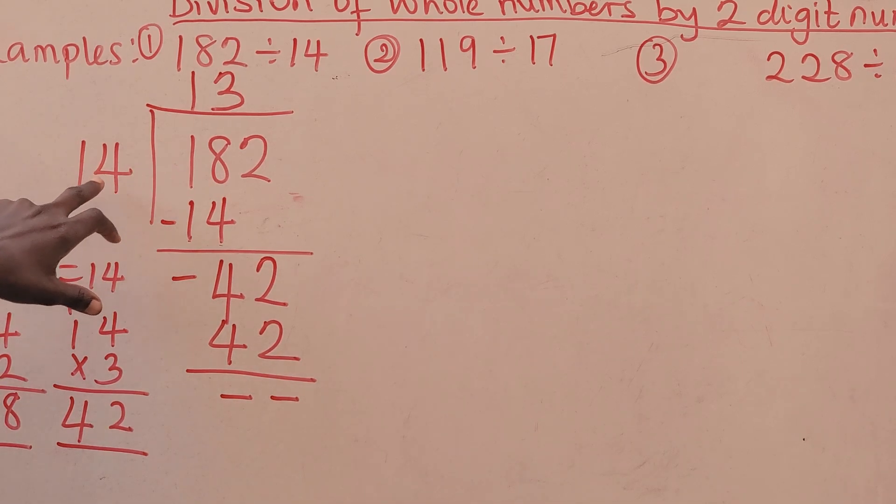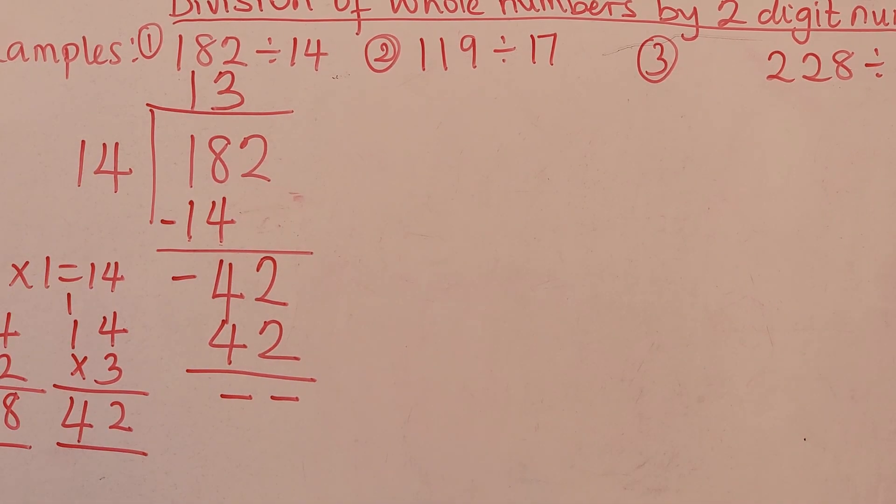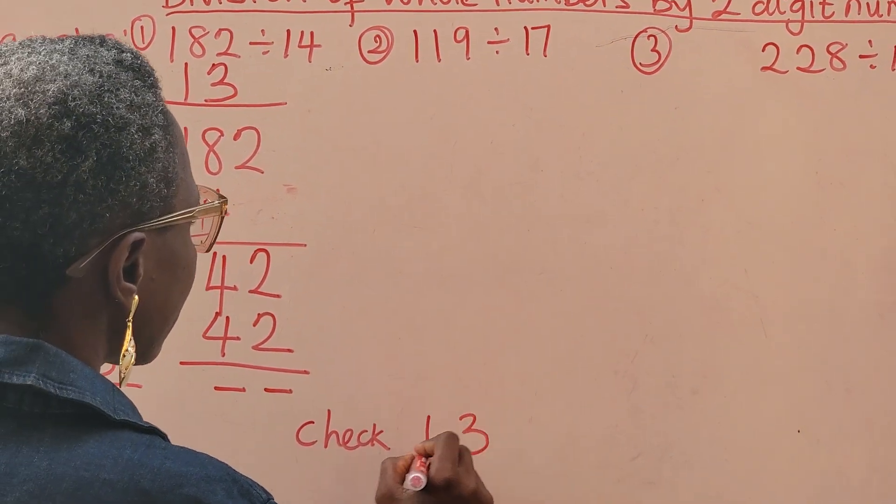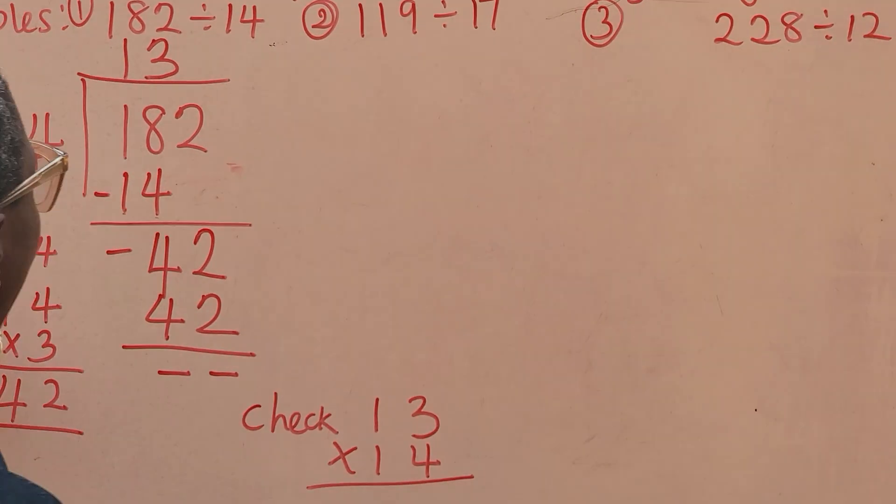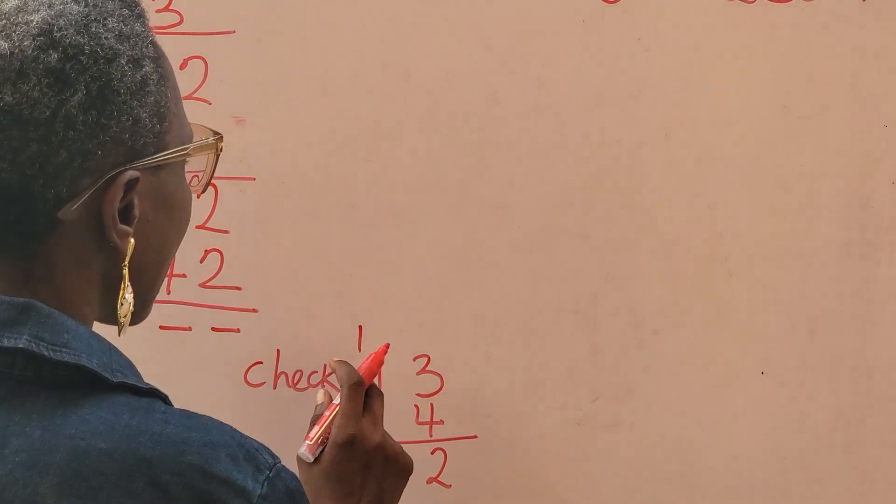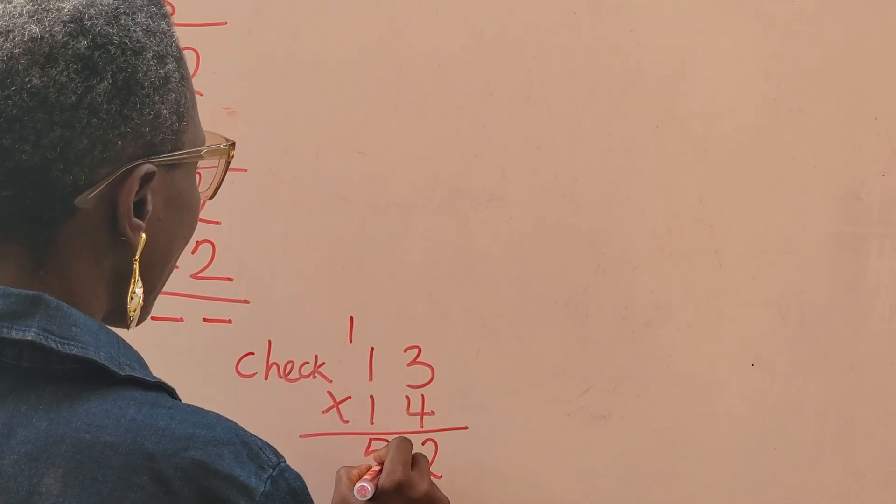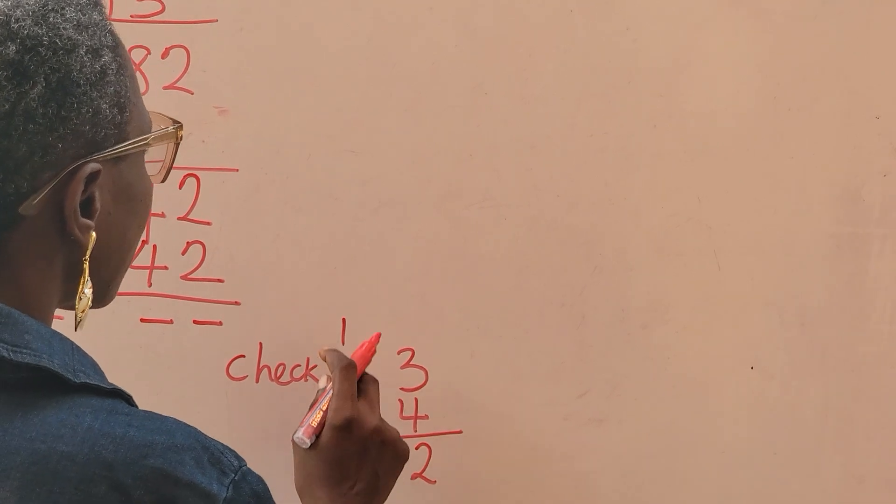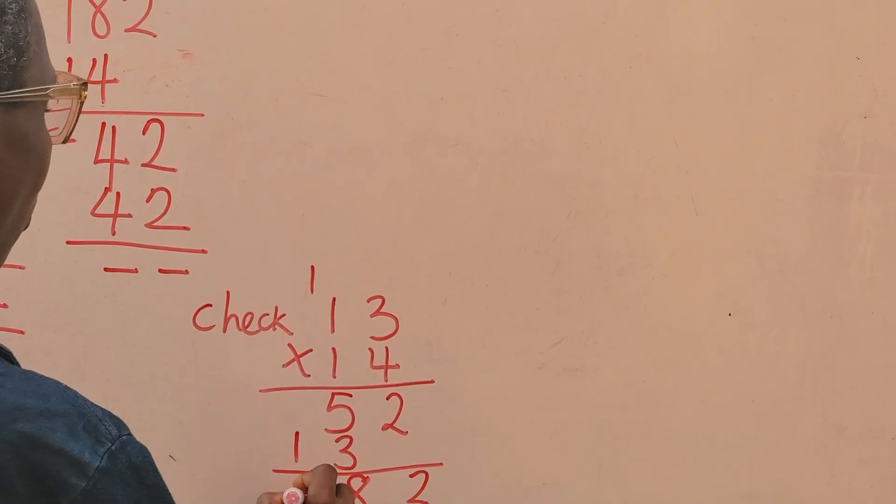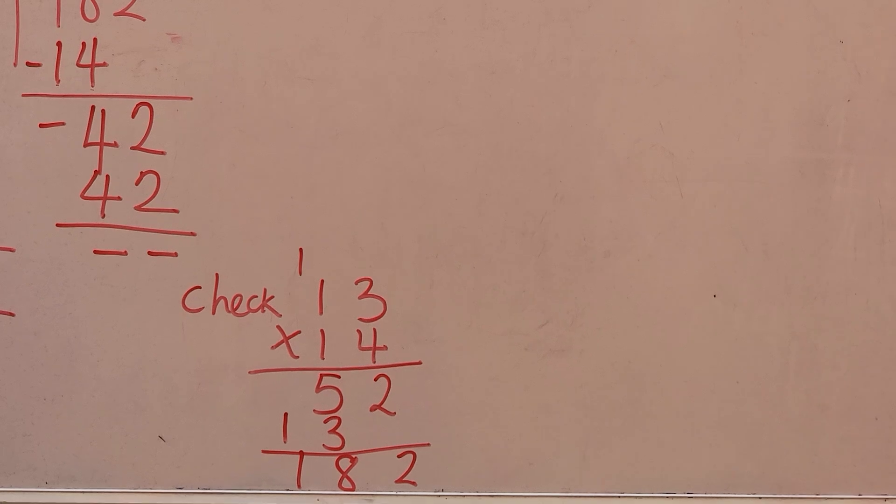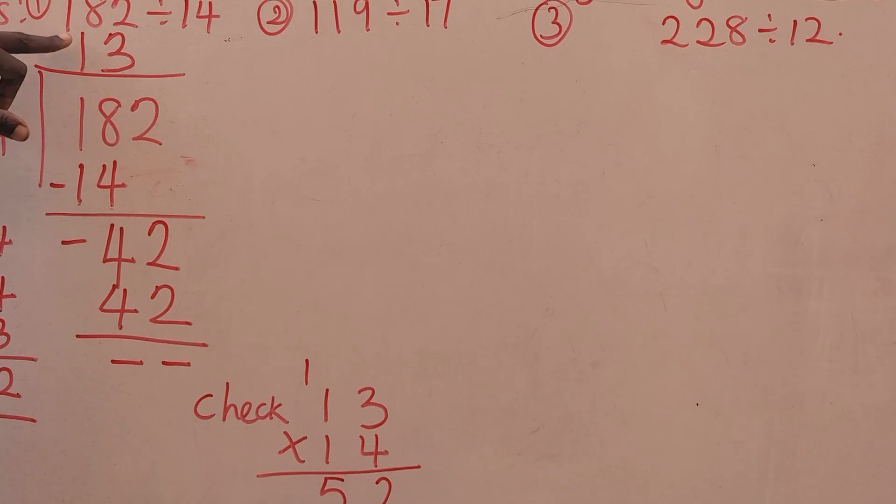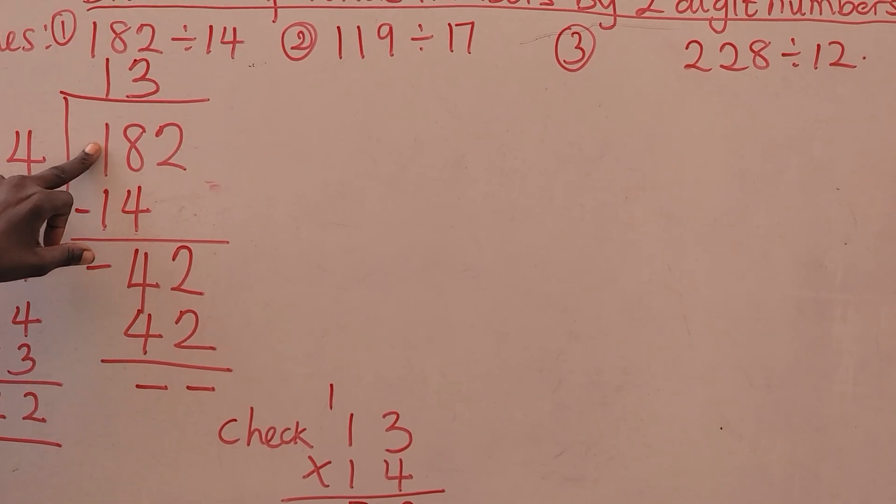If you want to check, you can multiply 14 by 13. I think we should do that. Let's check if you are correct. So, we say 13 times 14. If we get 182, it means our answer is correct. 4 times 3 is 12. 4 times 1 is 4 plus 1. That's 5. 1 times 3 is 3. 1 times 1 is 1. Then add 2, 8 and 1. You can see my answer is 182. That means I am absolutely correct. 182 divided by 14 is 13. 13 times 14 is 182.